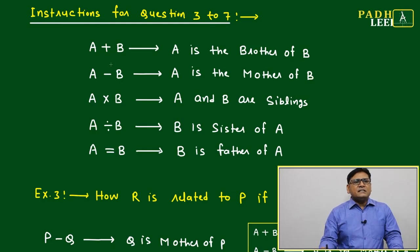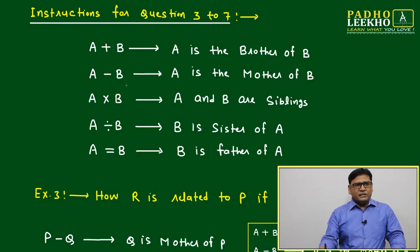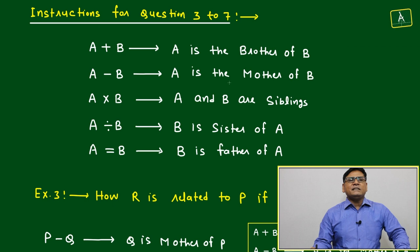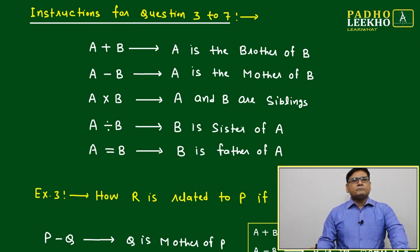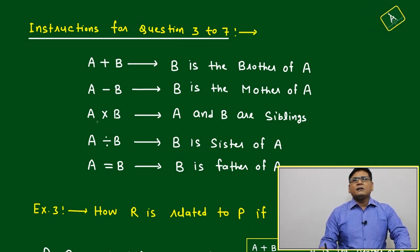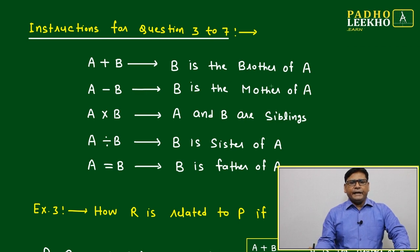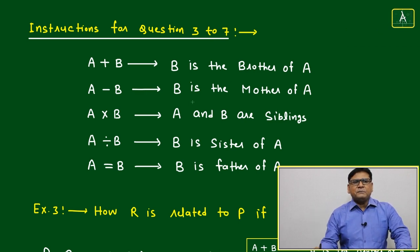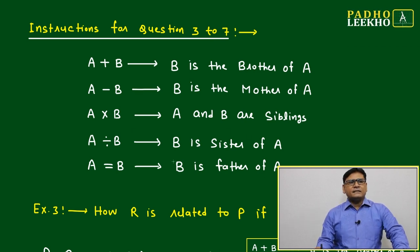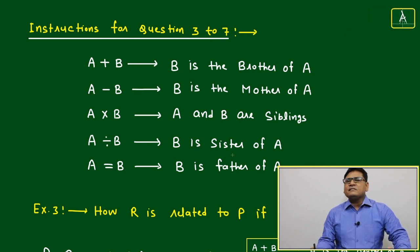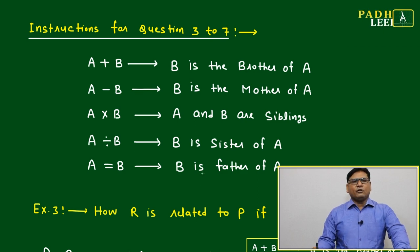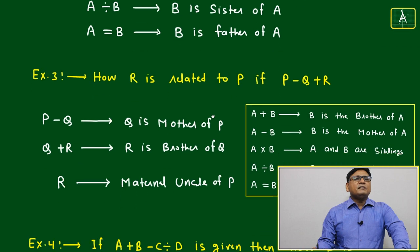Question number 327. The instructions are: A plus B means A is the brother of B; A minus B means A is the mother of B; A into B means A and B are siblings; A divide by B means B is the sister of A; and A equal to B means B is the father of A. These five relations are given — almost all are blood relations.